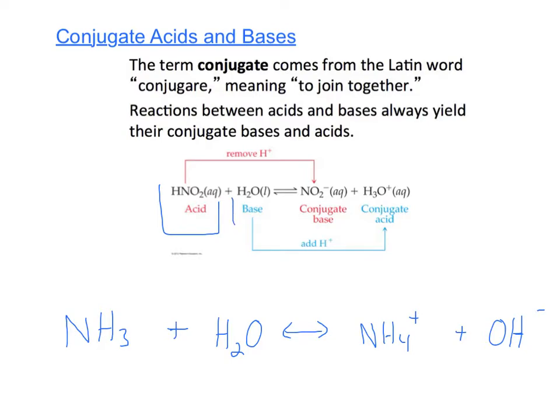For example, here I have nitrous acid reacting with water as a base. As a result, for my acid here I remove a proton - acids are proton donors - and I get NO2 minus. This is your conjugate base.